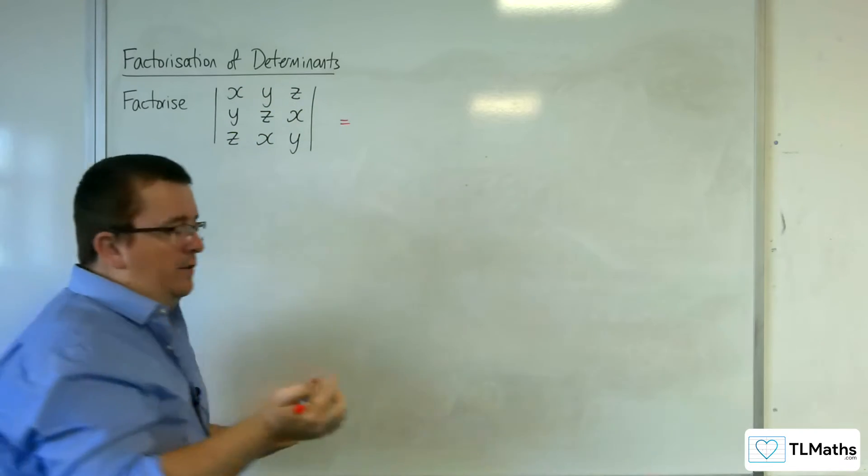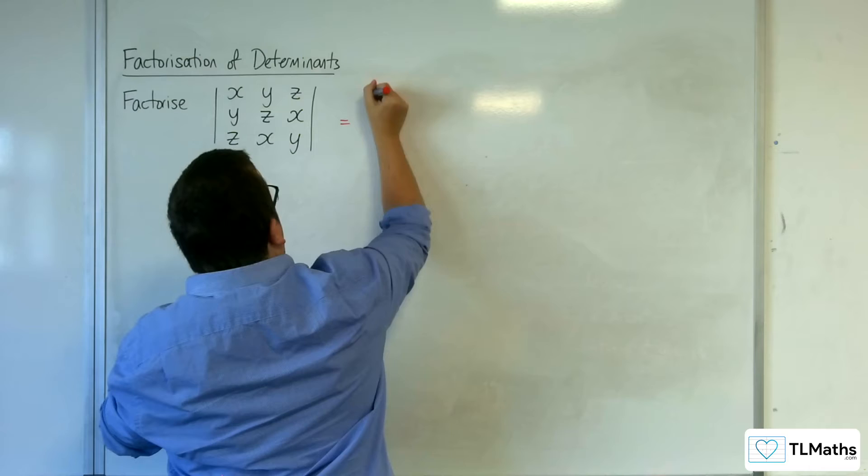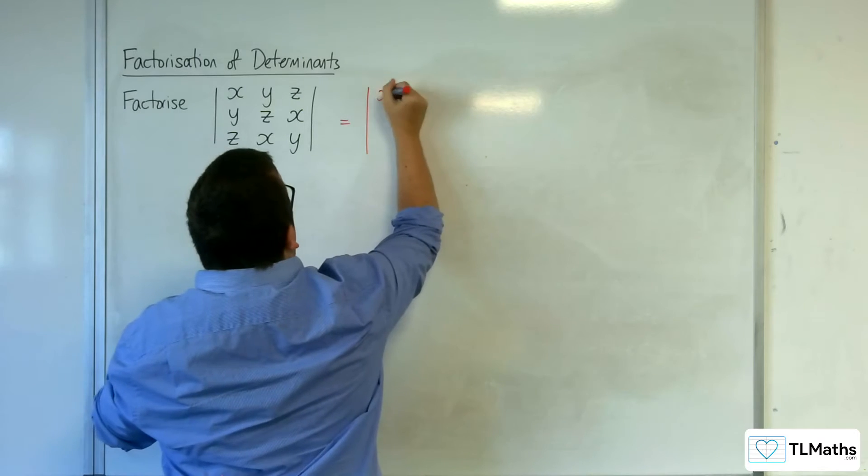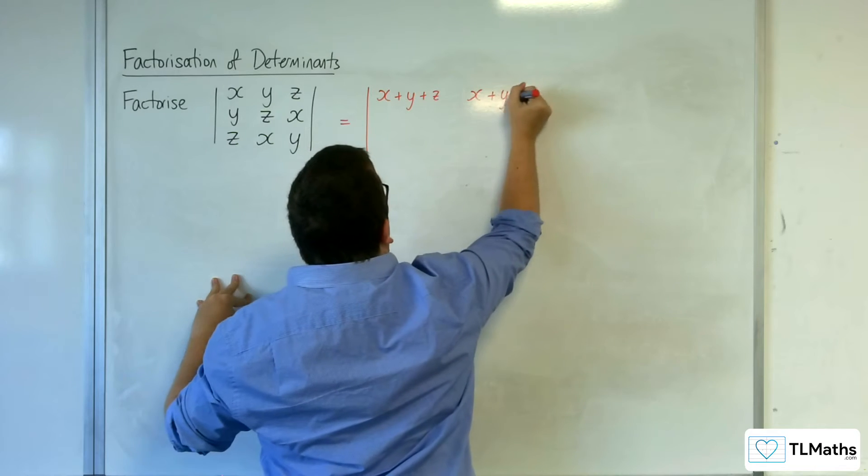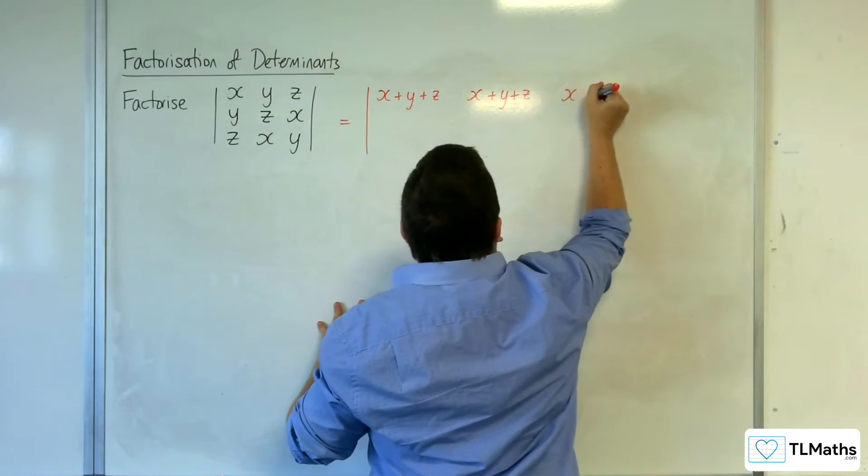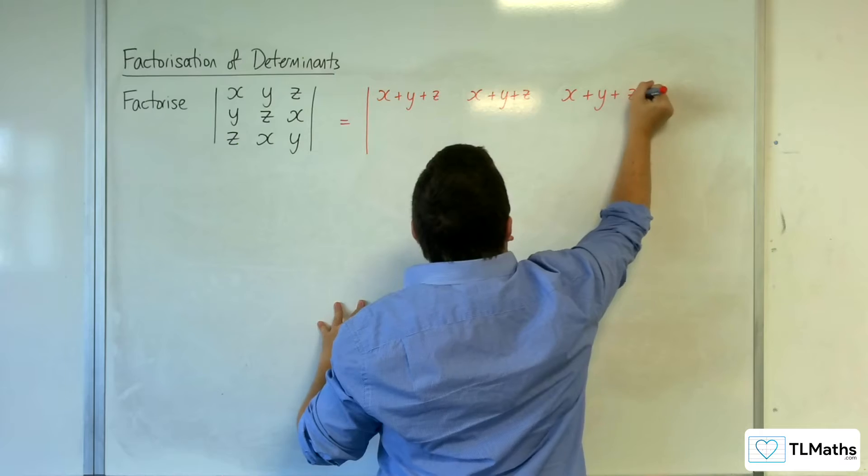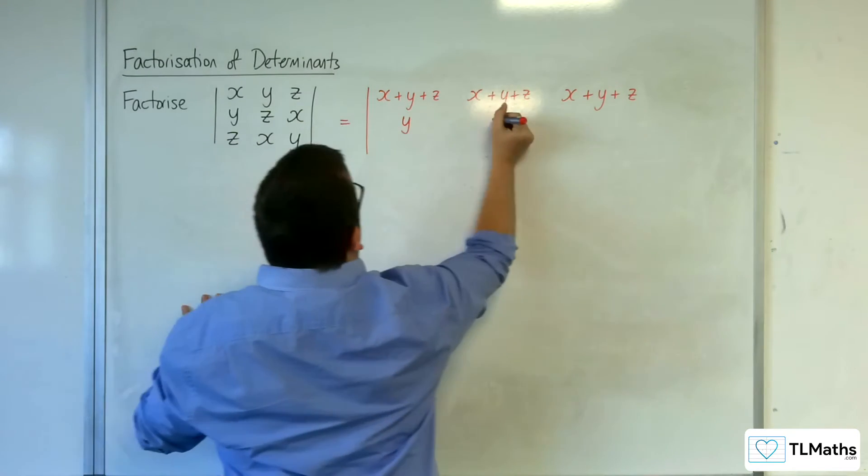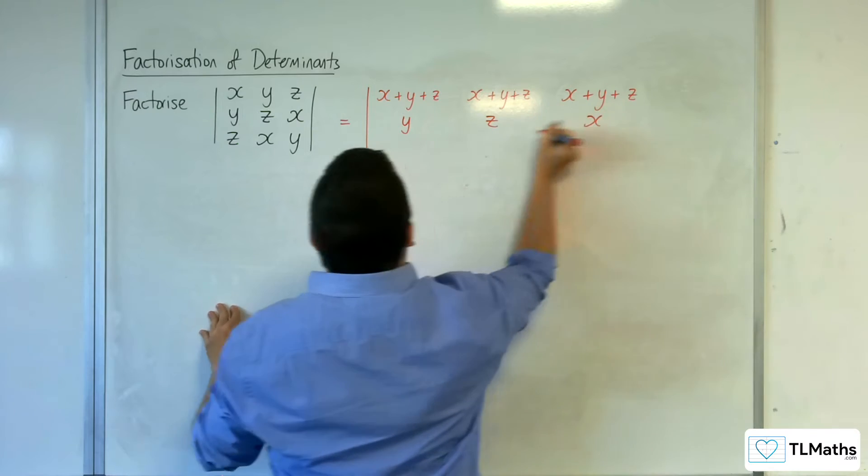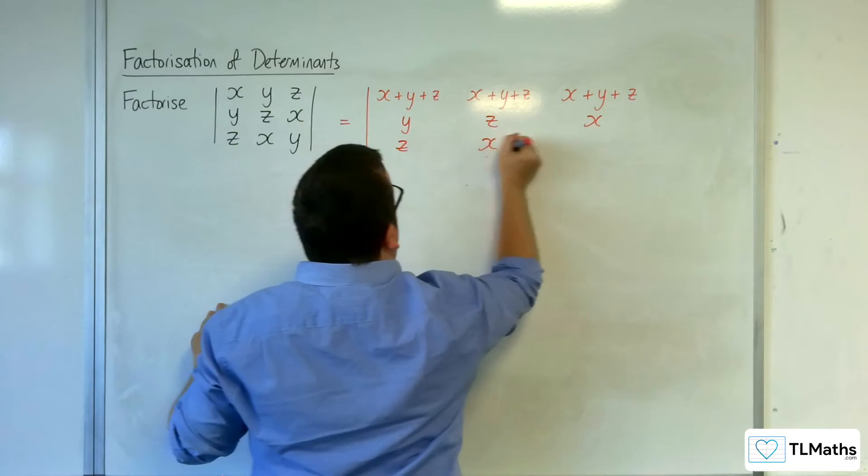Then I can factor that out. So if I do that, I'm going to get x plus y plus z, x plus y plus z, x plus y plus z in my top row. And I've still got y, z, x, z, x, y.